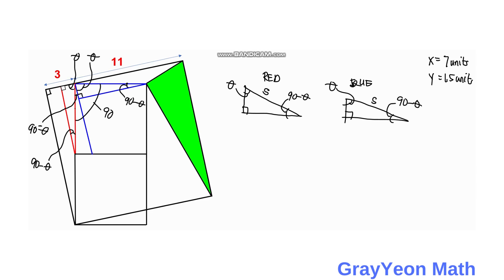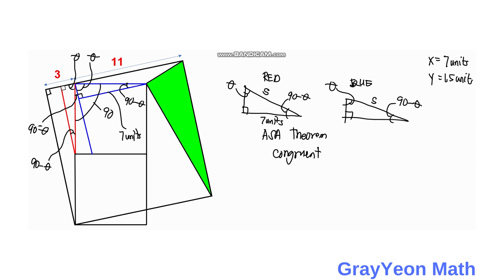By the angle-side-angle theorem, these two triangles are congruent. Being congruent, if we have for the red triangle that this side is 7 units, then for the blue triangle we can say that this corresponding length is also 7 units.